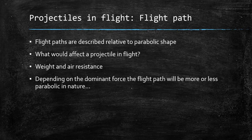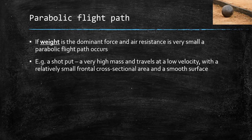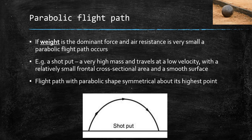Flight paths are described relative to that parabolic shape. What would affect a projectile in flight? We're talking about weight and air resistance. Depending on the dominant force, the flight path will be more or less parabolic in nature. A parabolic flight path occurs when weight is the dominant force and air resistance is very small. For example, a shot put has very high mass, travels at low velocity with a relatively small frontal cross-sectional area and a smooth surface, so it has relatively low air resistance. Therefore its flight path tends to be a parabolic shape, symmetrical about its highest point, because weight is the dominant force.